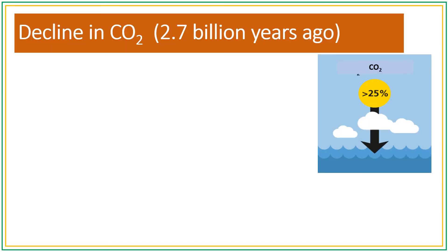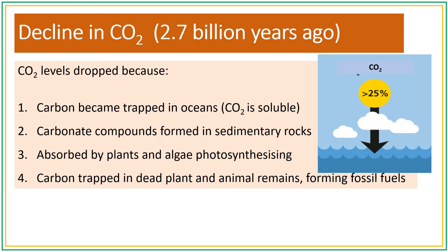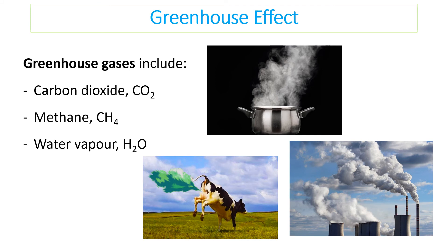Perhaps more important is the decline in carbon dioxide, which has fallen over 2.7 billion years. Carbon became trapped in the oceans — CO2 is soluble and the oceans absorb it, which is why we now worry about coral bleaching. Carbonate compounds also formed in sedimentary rocks: seashells and marine organisms made of carbon dioxide absorbed from water died and became sedimentary rock. Dead plants and animals also formed fossil fuels, trapping carbon away for a very long time, all of which significantly dropped carbon dioxide levels.